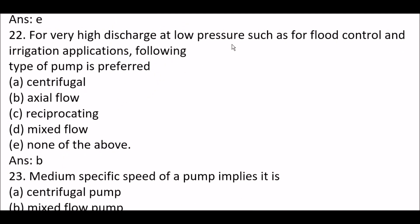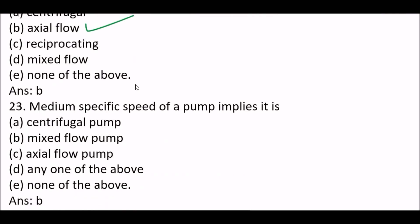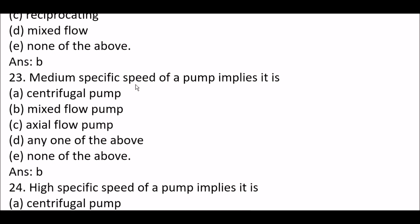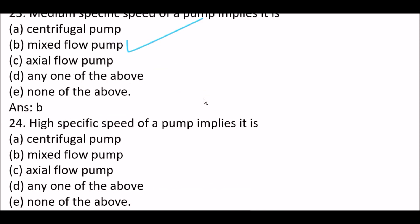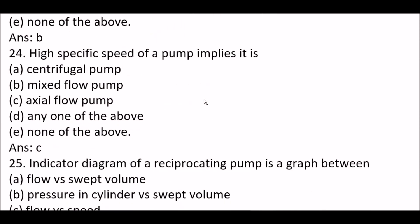Next question. For very high discharge at low pressure such as for flood control and irrigation applications, following type of pump is preferred: option B, axial flow. Next question. Medium specific speed of a pump implies its mixed flow pump, option B. Next question. High specific speed of a pump implies its axial flow pump, option C.